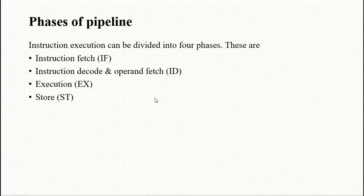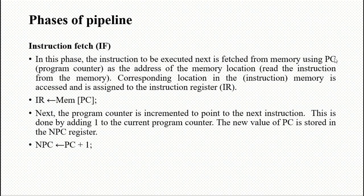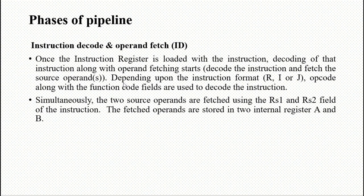We have four stages of pipeline — Fetch, Decode, Execute, and Store. In the Instruction Fetch stage, the instruction to be executed next is fetched from memory. The address of that instruction is stored in the Program Counter (PC). Once that PC address is used, we fetch the instruction from memory into the CPU. Once fetched, the PC automatically increments by one (PC+1), and the fetched instruction goes to the decode stage.